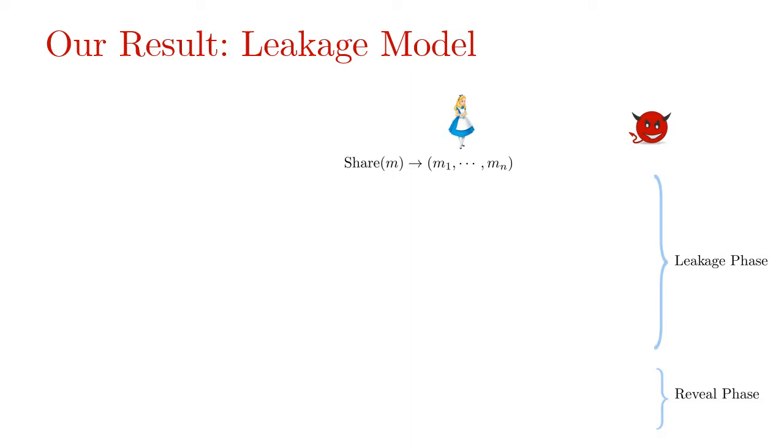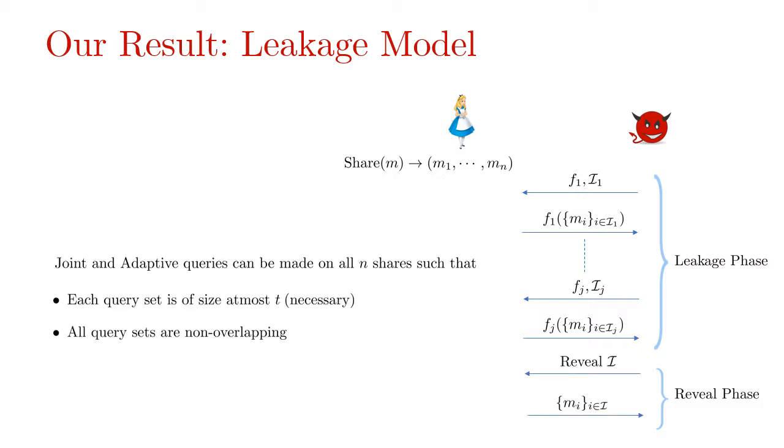In the leakage phase, the adversary can first ask for partial leakage on shares and get back the leakage responses and after the leakage phase in the reveal phase, he can ask for full shares and get them. All these queries can be made in a joint and adaptive manner on all N shares such that each query set is of size at most T, which is a necessary requirement. And the second requirement is that all query sets have to be non-overlapping across phases.